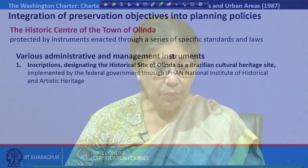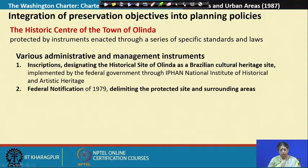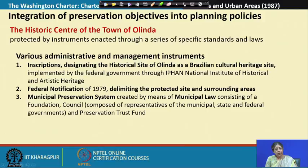The federal government inscribed through a series of legal instruments that Olinda is a historical site. In 1979, there was a federal notification delimiting the protected site and the surrounding area. So first there was the designation, and then a boundary was defined. This boundary delimitation also has to be done through a very scientific process. Third, the municipal preservation system — created by means of a municipal law — consisted of a foundation council composed of representatives of the municipal, state, and federal governments, along with a preservation trust fund.